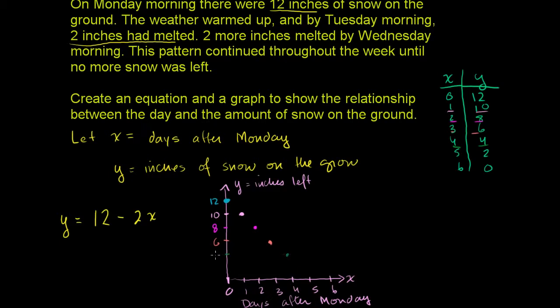So that is 4. And then 5 days after Monday, we have 2 inches on the ground. And then finally on the 6th day, 6 days after Monday—Sunday now—we are going to have no inches on the ground. That's that right there.